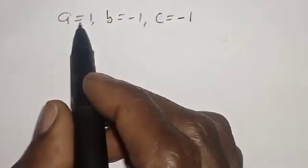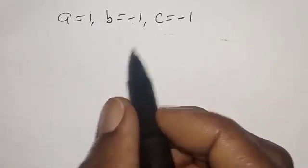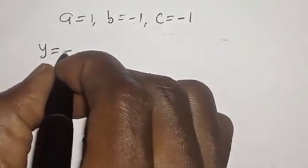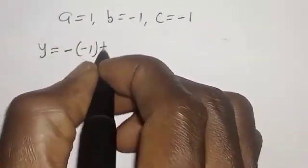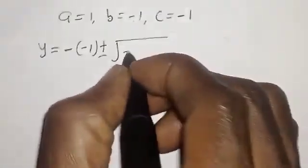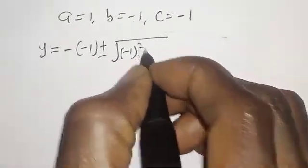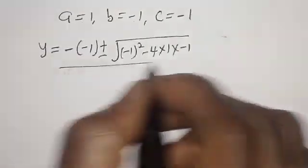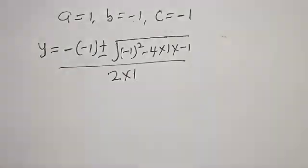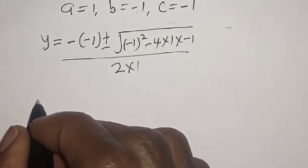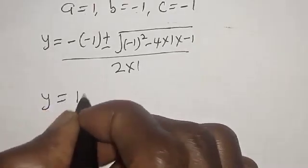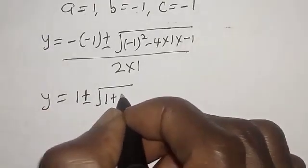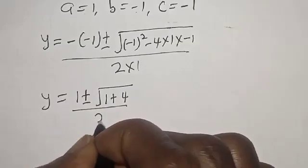Now a equals 1, b equals minus 1, and c equals minus 1. Then y equals minus times minus 1, plus or minus square root of minus 1 squared minus 4 multiplied by 1 multiplied by minus 1, over 2 multiplied by 1. This gives y equals 1 plus or minus square root of 1 plus 4 over 2.